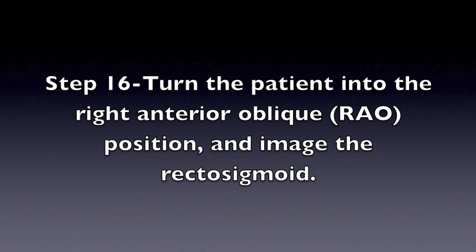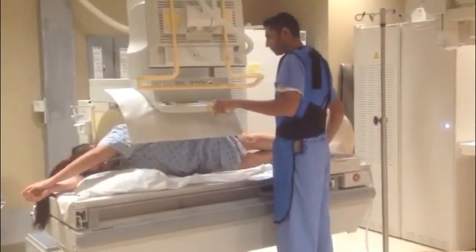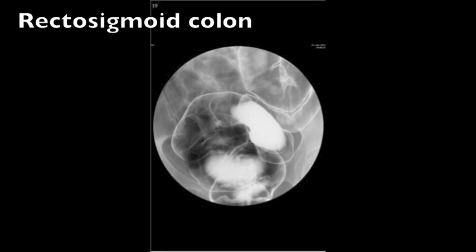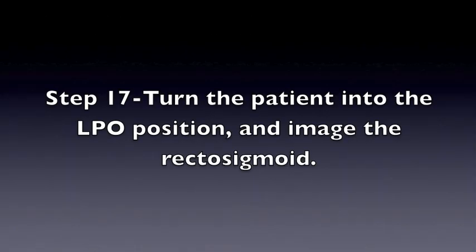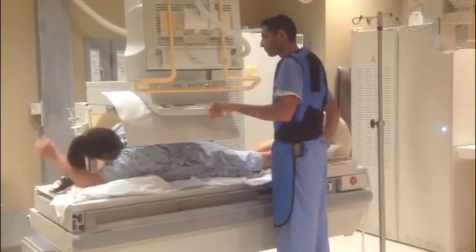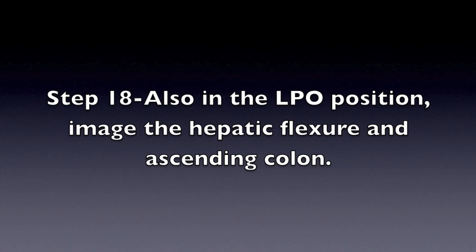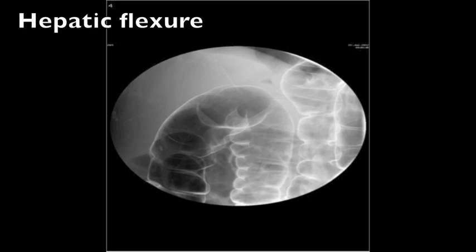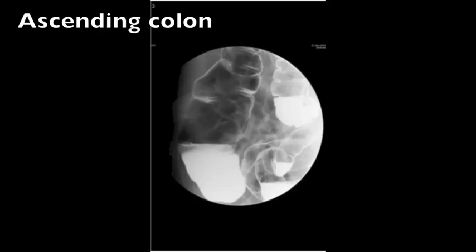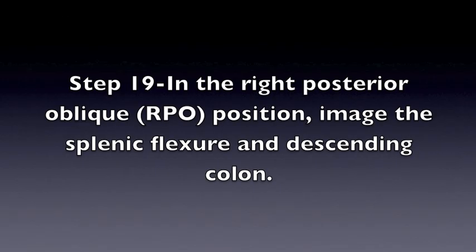Step 16: Turn the patient into the right anterior oblique (RAO) position and image the rectosigmoid. Step 17: Turn the patient into the LPO position and image the rectosigmoid. The purpose is to image the rectosigmoid in the same position but to move the air-fluid column to ensure complete circumferential evaluation of the rectosigmoid. Step 18: Also in the LPO position, image the hepatic flexure and ascending colon. Step 19: In the right posterior oblique (RPO) position, image the splenic flexure and descending colon.